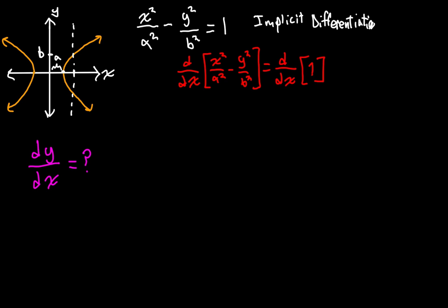What's the derivative of 1 on the right side? That's just going to be 0 — it's a constant, so the slope is just 0. Now I'm going to split up the left into two separate parts. I'm going to take out the 1 over a squared and 1 over b squared as coefficients. So this is going to be 1 over a squared times d/dx of x squared, minus 1 over b squared times d/dx of y squared. I've separated the derivative out into two separate derivatives.